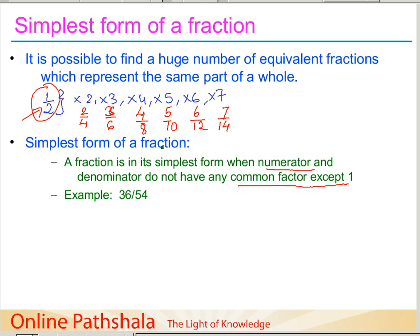Let us take an example to reduce the fraction 36/54 to its simplest form. We start with the obvious factor — we check if we can divide the numerator and denominator by a common factor, starting with the smallest number, 2. When we divide 36 by 2 we get 18, and when we divide 54 by 2 we get 27. Now 18 and 27 still have a common factor, so we can divide both by 3 to get another equivalent fraction.